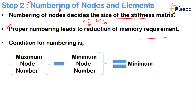You have to properly number the elements; only with proper numbering will memory requirements be less and the problem solved easily. If you randomly do the numbering it becomes very difficult. The condition for numbering is that the maximum node number minus the minimum node number should come to a minimum value — only then will your numbering be in proper order.